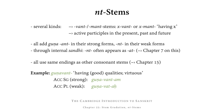Just one brief first example: the adjective gunavant means 'having qualities' or 'having good qualities,' and therefore 'virtuous.' This is formed by taking the noun guna (meaning 'quality') and adding want. An example of a strong form would be the accusative singular gunavantam, where we have guna plus the strong want and the accusative singular ending am. As opposed to the accusative plural, which is weak: gunavatas, consisting of guna plus the weak form vat and the accusative plural ending.